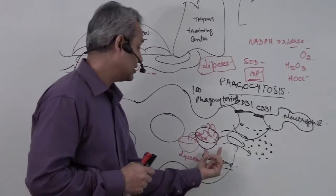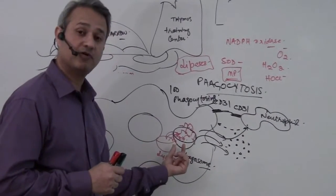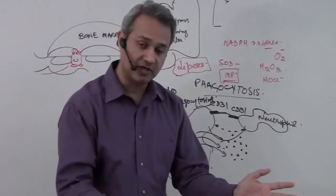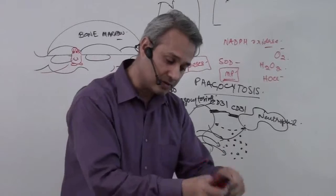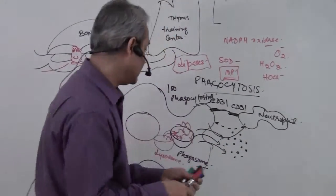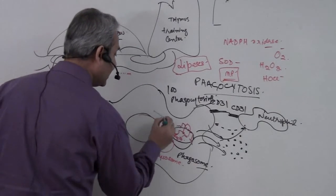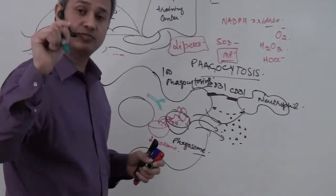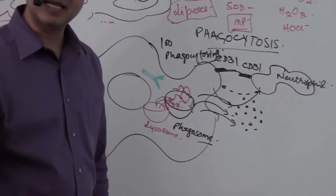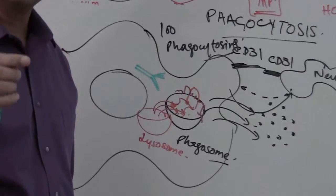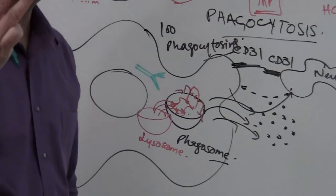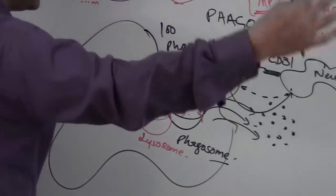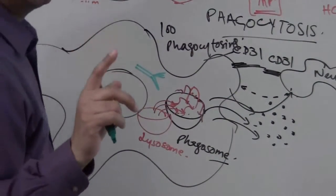The phagosome fuses with the lysosome to form a phagolysosome, and the bacteria is broken down. As the bacteria keeps getting chopped up on a chopping block, the macrophage has MHC class 2 proteins. MHC class 2 is present only on antigen presenting cells—professional APCs. There are just three professional APCs: dendritic cells, macrophages, and B cells.